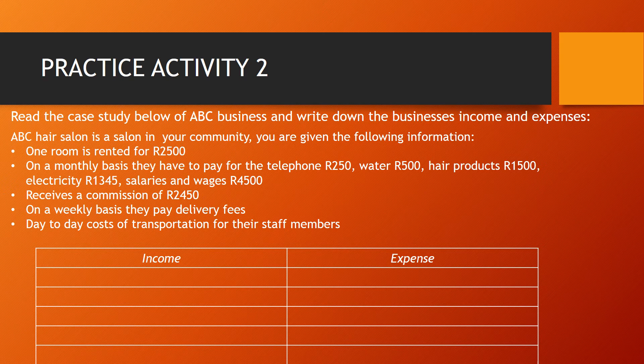The case study: ABC Hair Salon is a salon in your community. You are given the following information. One room is rented for $2,500 to another business. On a monthly basis, they have to pay for telephone, water, hair products, electricity, salaries, and wages. They receive a commission of $2,450. On a weekly basis, they must pay delivery fees. There is also a day-to-day cost of transportation for their staff members. Go through each point and determine whether it is income or an expense.